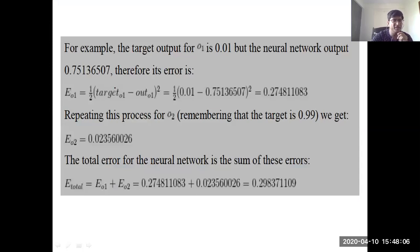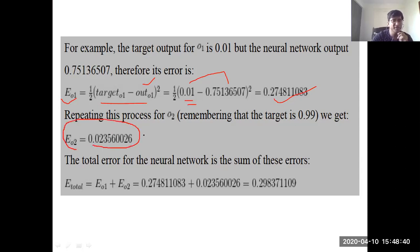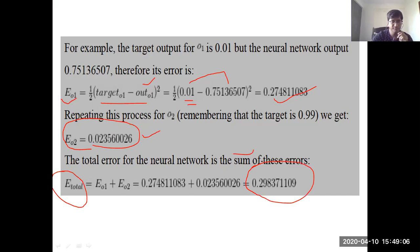Calculating the error for output one: the target was 0.01 and the calculated output was 0.75, giving an error of 0.27. Similarly, we calculate the error for o2. These two errors are summed to get the total error, which comes out to be 0.29. This is the end of phase two — phase one was the forward pass, phase two was error calculation.